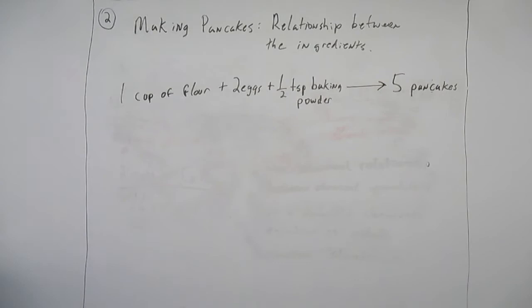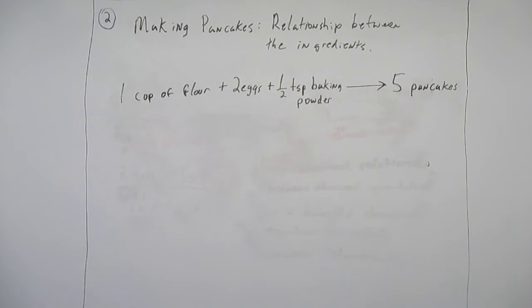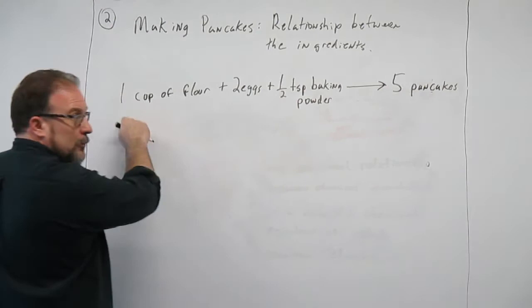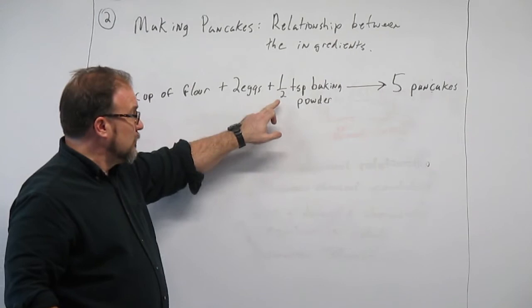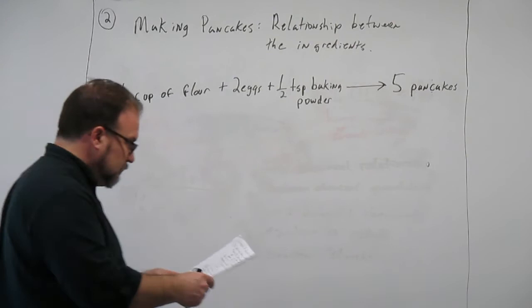Just like the chemical equation for combustion of fossil fuel, there are ratios that have to hold. When making five pancakes, you need one cup of flour. If you're making ten pancakes, you need two cups of flour — you multiply by two. You also need four eggs and a full teaspoon of baking powder. You multiply through by the ratio that you need. That's exactly the same thing you do in this chapter with quantities and chemical reactions.